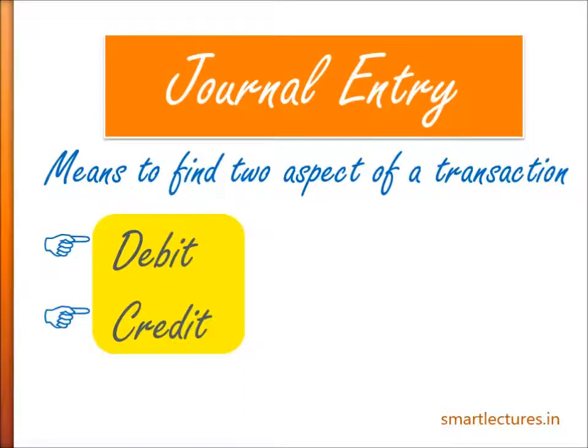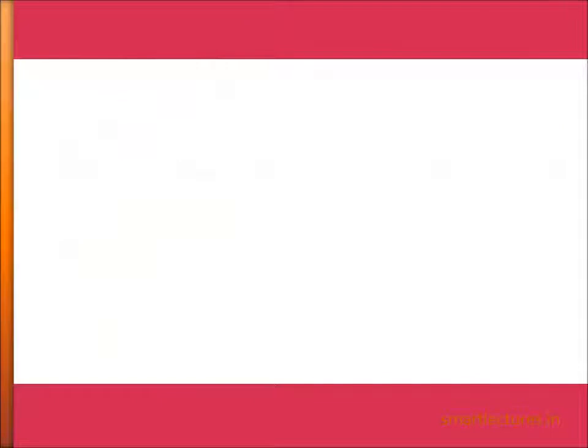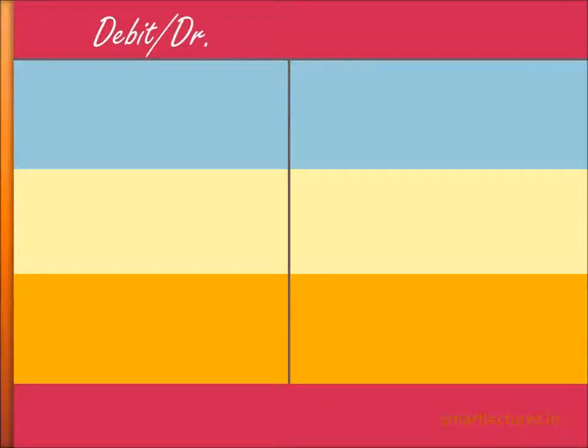To find out the debit and credit aspect, you will have to create a table. Create a cross like the cross of a church, so now you have two sides: left hand side and right hand side. Draw three horizontal parallel lines, giving you three boxes on the left hand side and three boxes on the right hand side. At the top, on the left hand side, write down 'Debit,' and on the right hand side, write down 'Credit.'